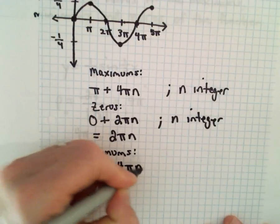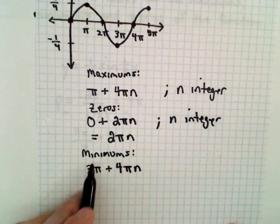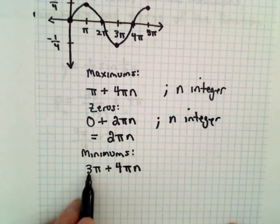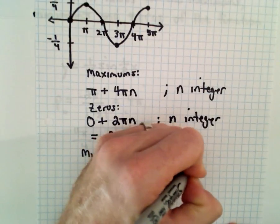So we'll just have to add a multiple of four pi, because that's the period. So the minimums occur at the x-coordinates, three pi plus four pi times n, where n is an integer.